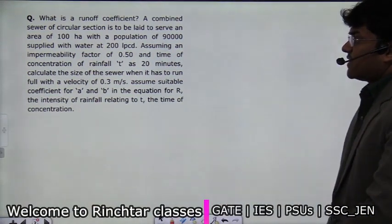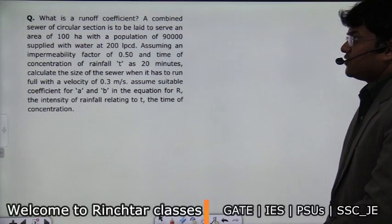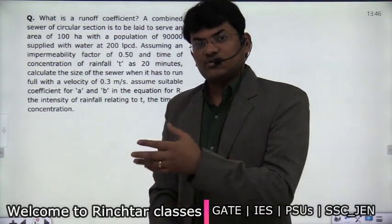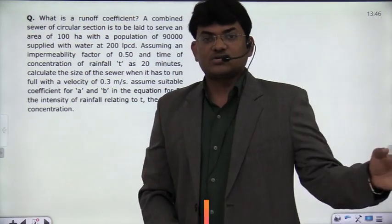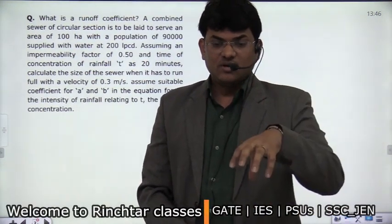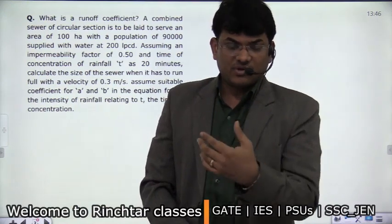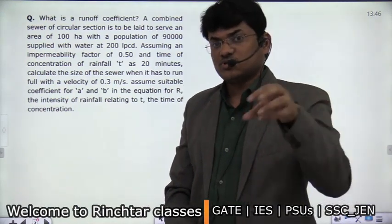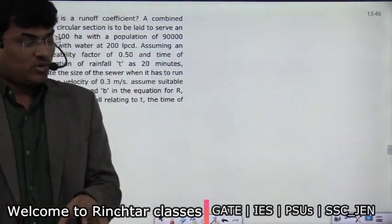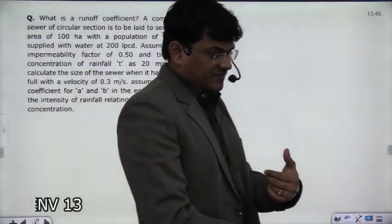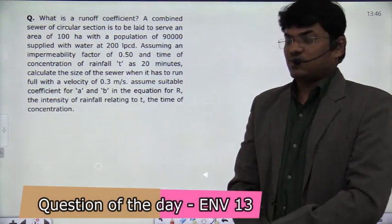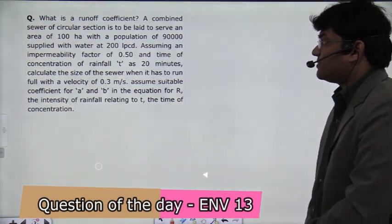What is the runoff coefficient? Basically, the rain has some portion that travels over the surface into streams. How much portion of the rainfall travels over the surface into the stream is called the runoff coefficient. This is also called the impermeability factor.